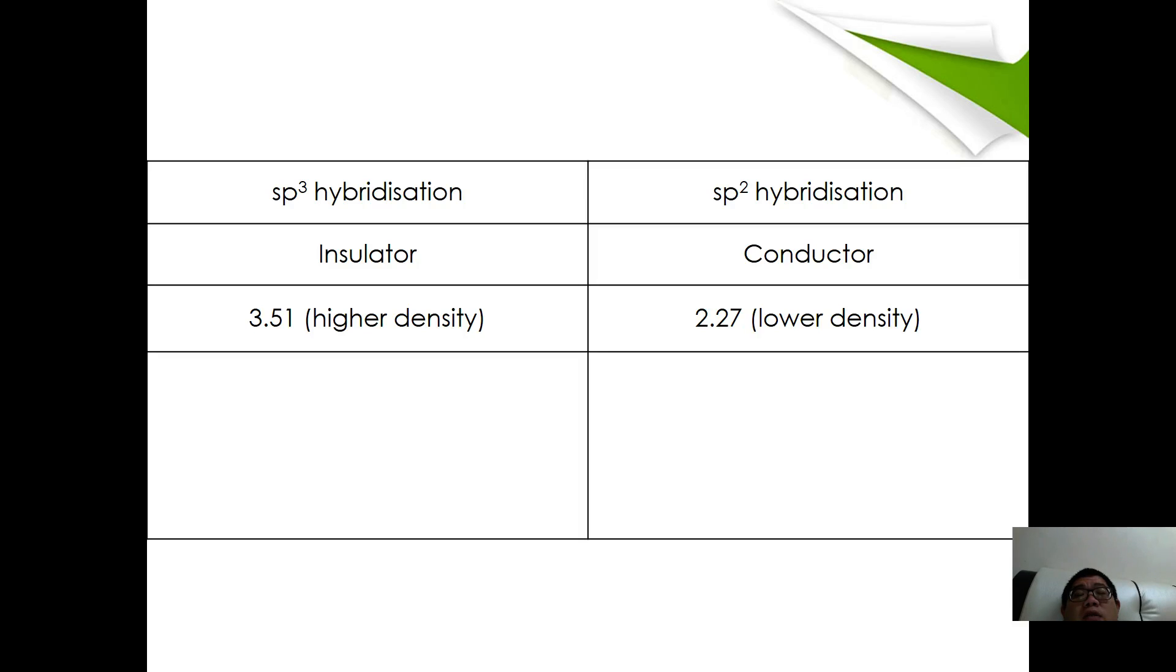Based on the understanding just now, we say that carbon in diamond is sp3 hybridized, whereas carbon in graphite is sp2 hybridized. In terms of conductivity of electricity, diamond is an insulator while graphite is a conductor. Diamond has a higher density compared to graphite.